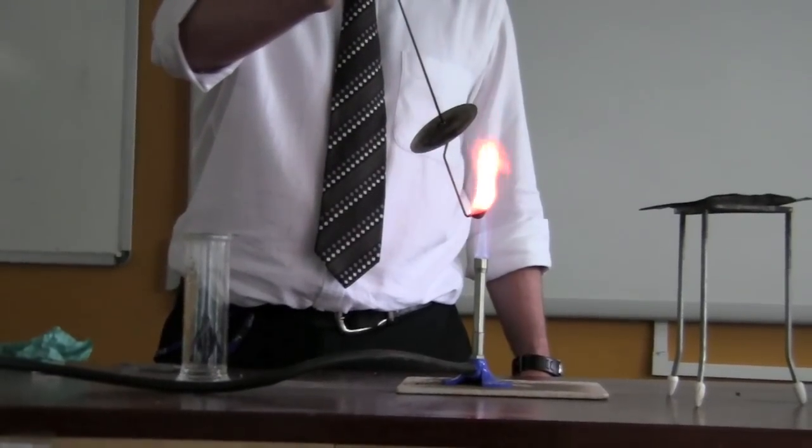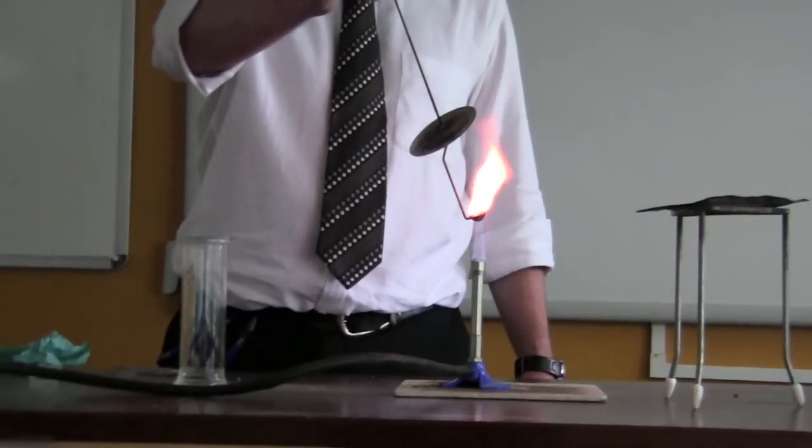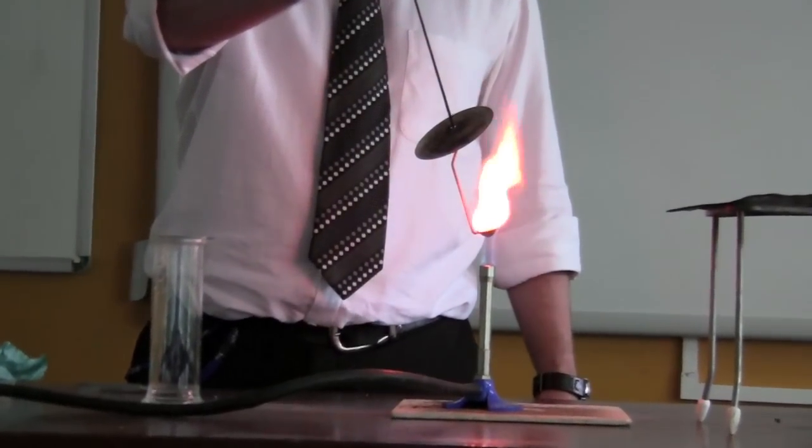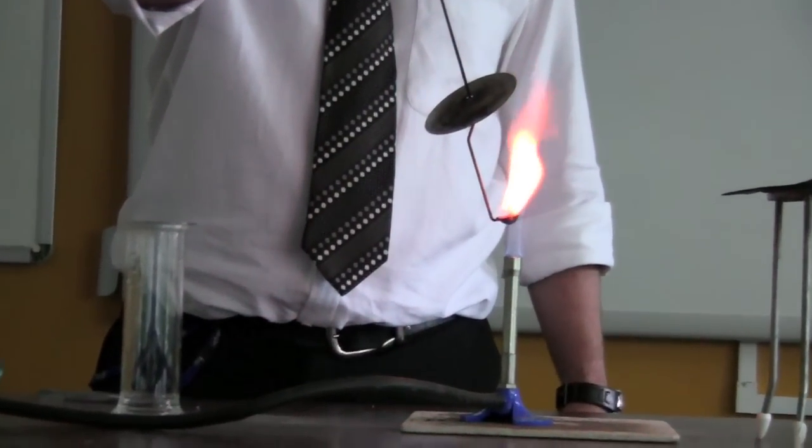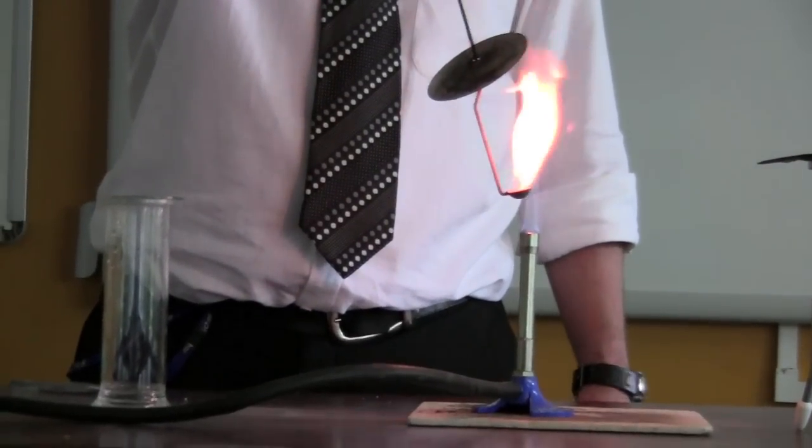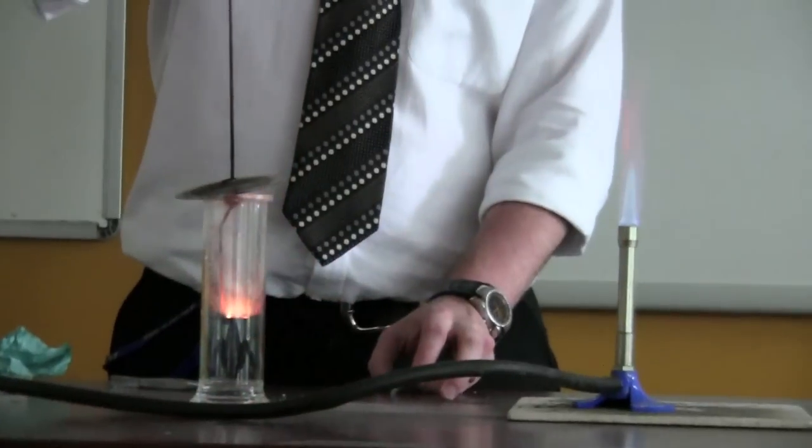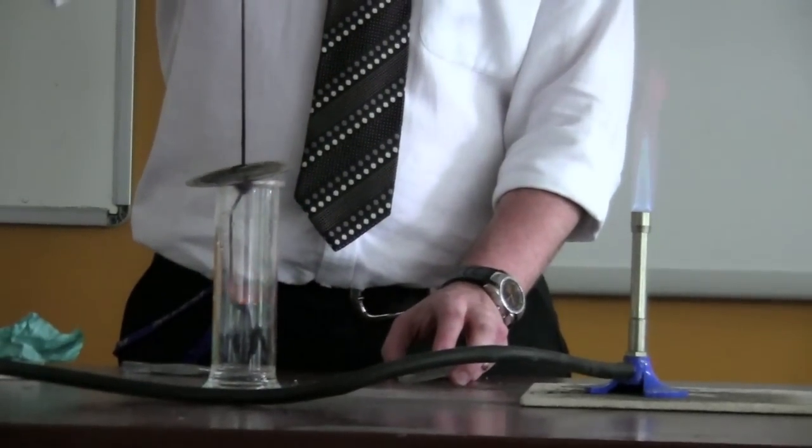Heat the sodium on the spoon. If you're as close as me, you can see it starting to melt. It's getting very hot. It's only a small piece. Put it in the oxygen.